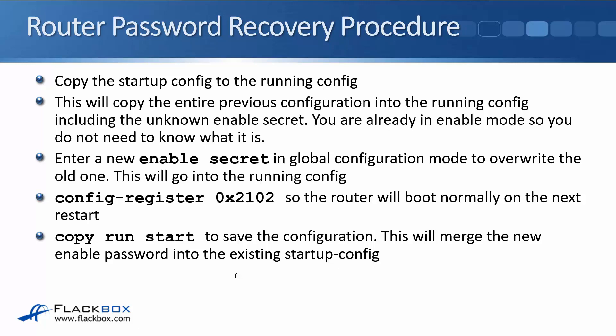Copying the startup config to the running config will copy the entire previous configuration into the running config, including the unknown enable secret. But you're already in enable mode, so you don't need to know what that enable secret was. You then enter a new enable secret in global configuration mode to overwrite the old one. Then enter config-register 0x2102 so the router will boot normally on the next restart. Don't forget to do this either — if you do, every time you boot up it will boot with a blank config. If you ever see that symptom, it's because the config register is set to 0x2142.